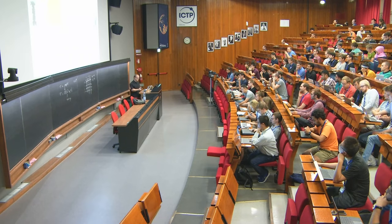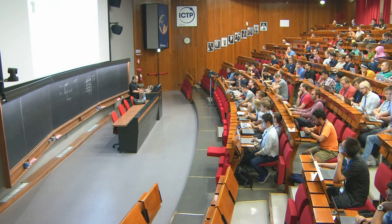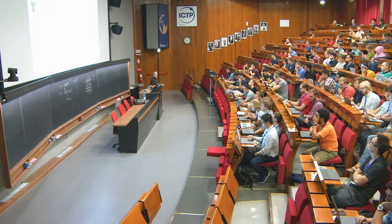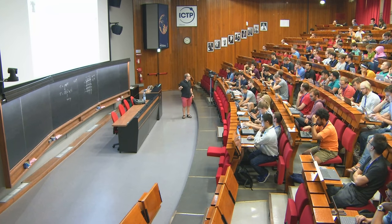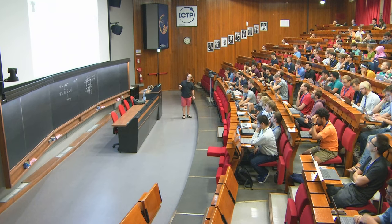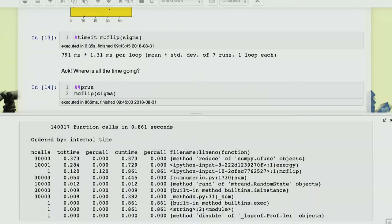Let's use the percent percent prun magic to find where the time is going. The difference between single percent and double percent is that double percent applies to the whole cell. It will profile the whole block — that's what the 'p' stands for: profile and run. The single percent applies to things on the same line. So let's see what this pops out. It gives us a little view showing how many calls to different subroutines were made, how much time was spent in them, cumulative time, and per-call time. They're ordered roughly by how much time you're spending in each.